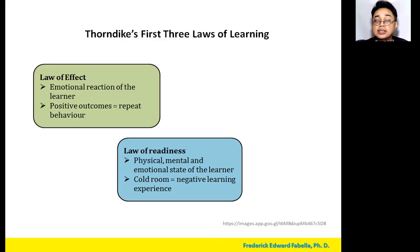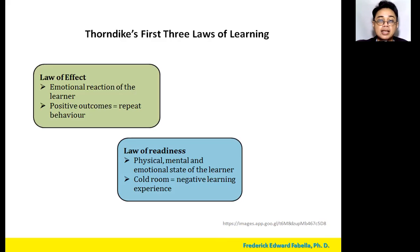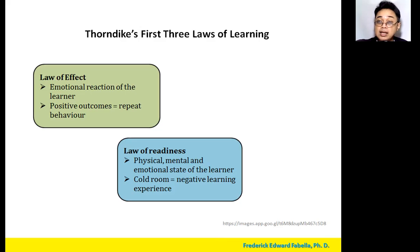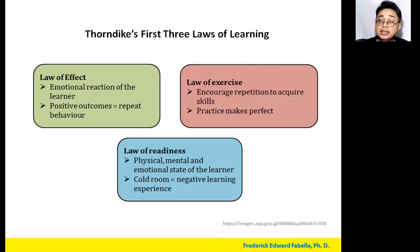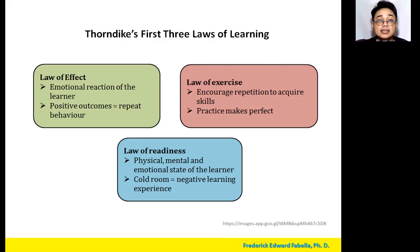Another law by Thorndike is the law of effect — what is the emotional reaction of the learner? This has something to do with the positive outcome that comes after the behavior. Whether or not the learner will repeat the behavior depends on that emotional reaction or positive outcome. The third law is the law of exercise: for a learner to develop a particular skill, there must be repetition or practice — as the saying goes, practice makes perfect.